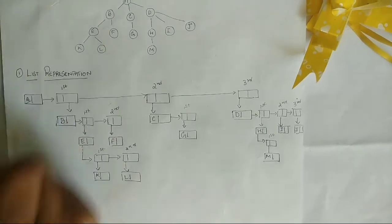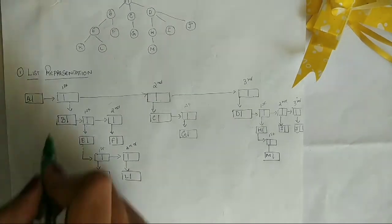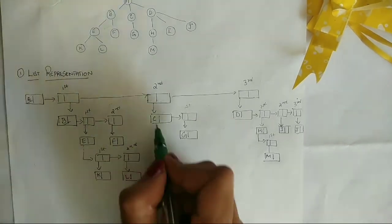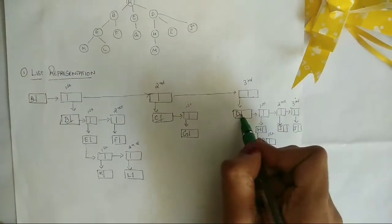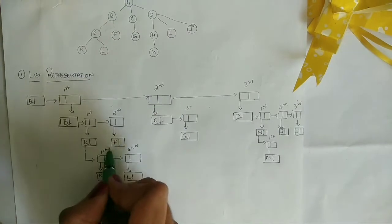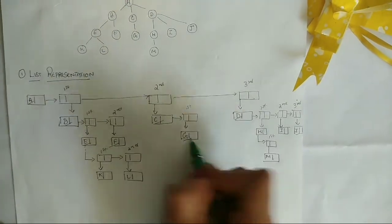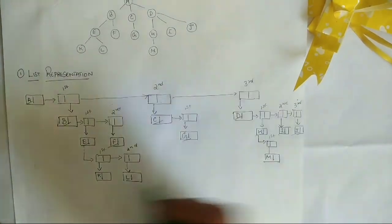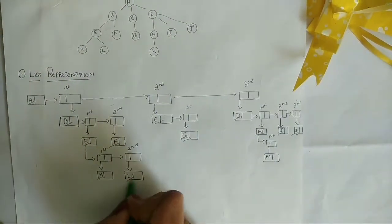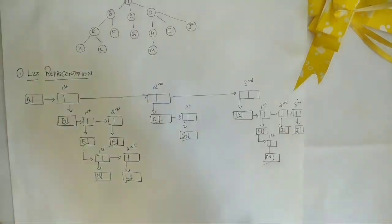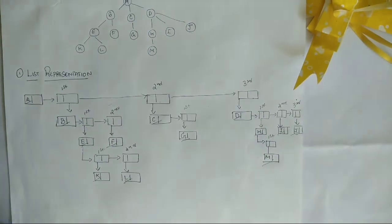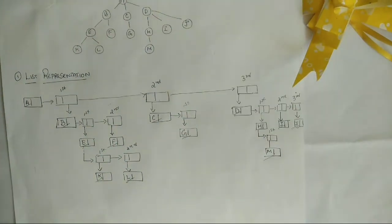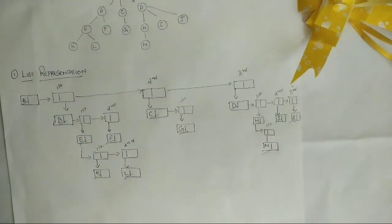So the nodes A, B, C, D, E, F, G, H, I, J, K, L, M are all done. That's it with list representation.